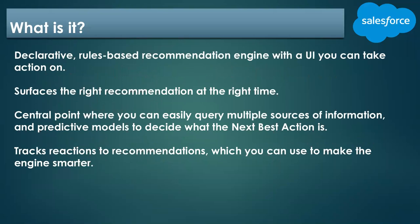Here are a few definitions as my takeaways of what Einstein NBA is. You'll probably need multiple mental models to fully understand it, and you'll also need to play with it. One way to describe it: it's a declarative, rules-based recommendation engine with a UI you can take action on. Declarative and rules-based — that's not AI, that's configuring workflow-type rules. But it also gives you a UI to take the next step, providing a framework to put actions on the recommendations.